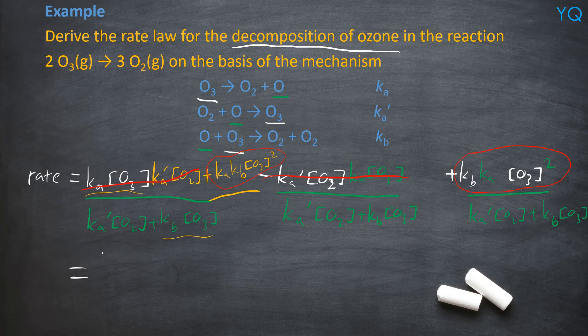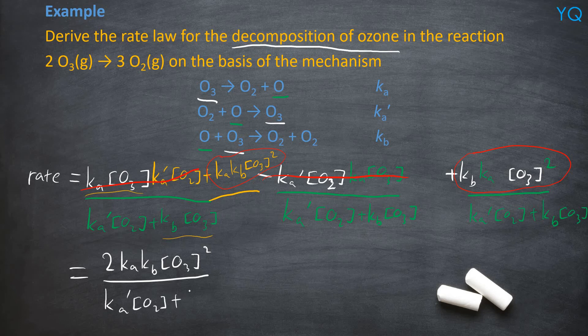Okay? So to make things easy, it would just be 2 Ka Kb O3 squared divided by Ka prime O2 plus Kb O3. Okay? And that's it.